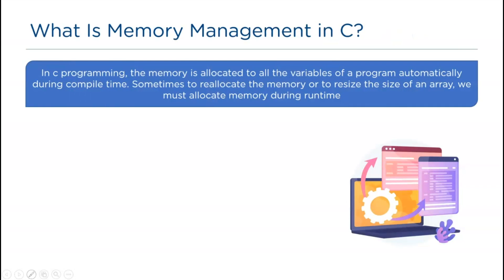As we all know, in C programming the memory is automatically allocated to all program variables during compile time. Sometimes, to reallocate memory or to change the size of an array, we must allocate memory during runtime.